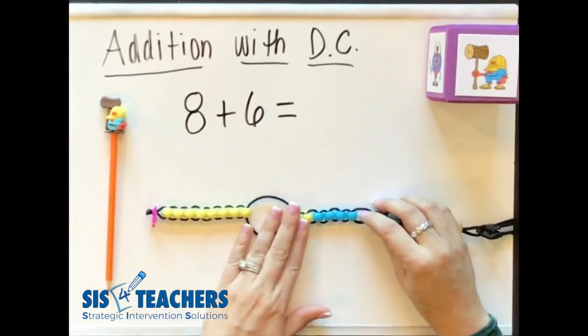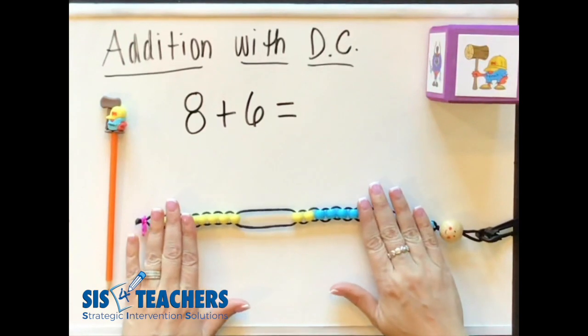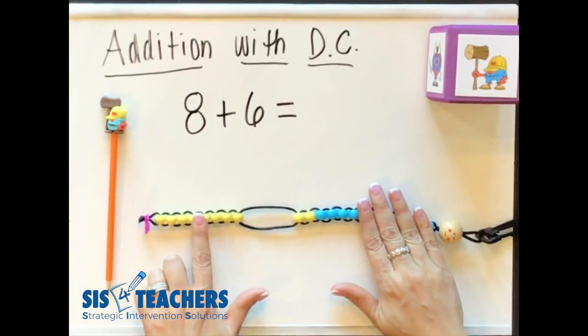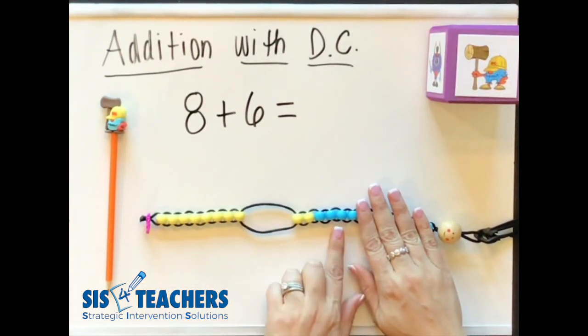So I'm going to pull over my 6. So we're focused here on what we're looking at. We're trying to add 8 plus 6. We want kids concretely to see how they're going to make that connection to the 10.